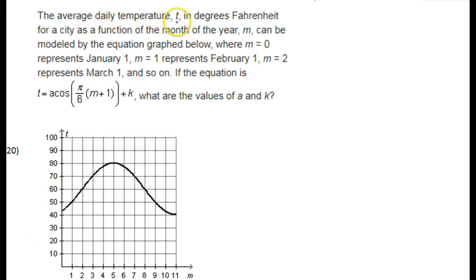The average daily temperature T in degrees Fahrenheit for a city as a function of month of the year M can be modeled by the equation graphed below, where M equals zero represents January 1st, M equals one represents February 1st, and M equals two represents March 1st, and so on. If the equation is T equals A cosine of pi over 6 times M plus 1 plus K, what are the values of A and K?